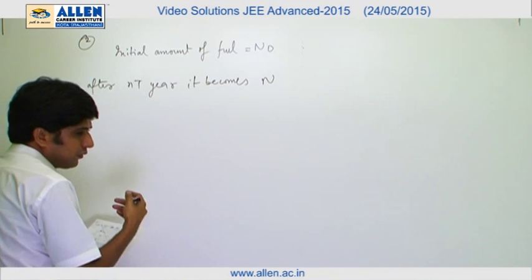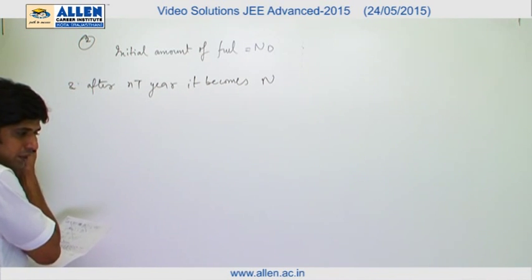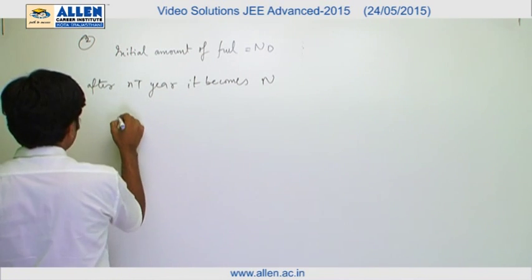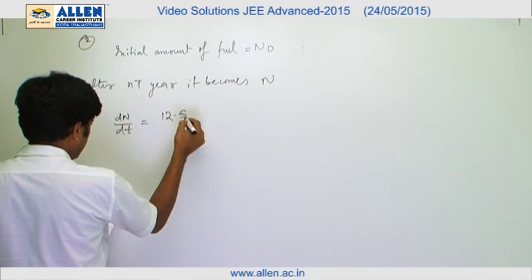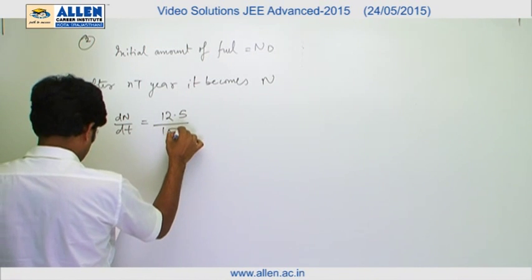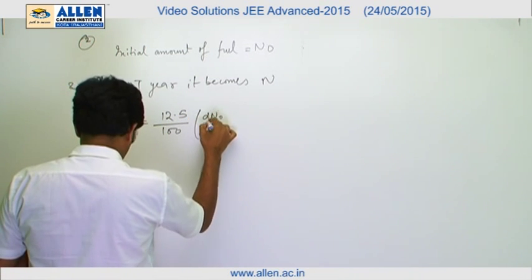according to the equation which is given in the question, it is given that dN/dt equals to 12.5 percent, that means 12.5 upon 100 dN naught by dt.